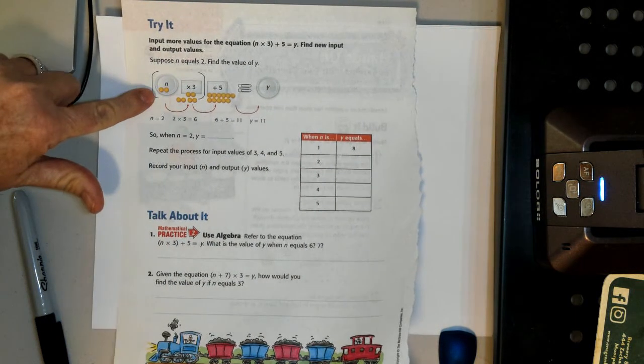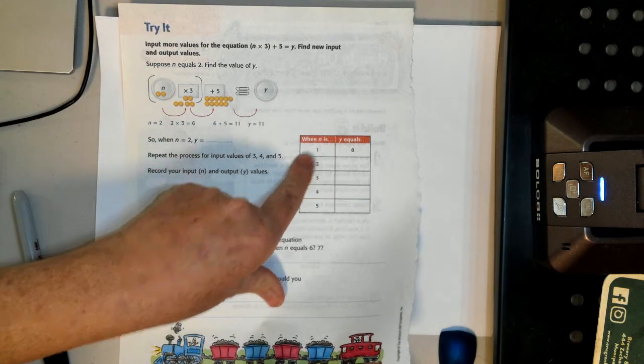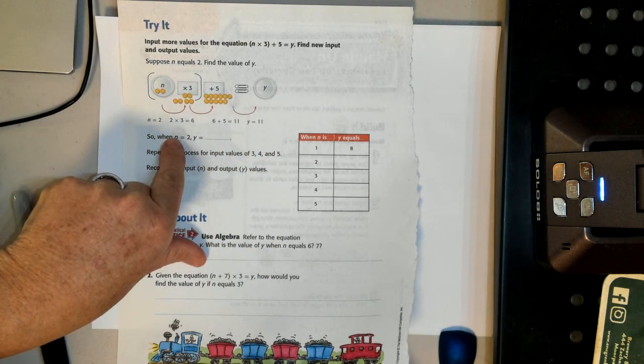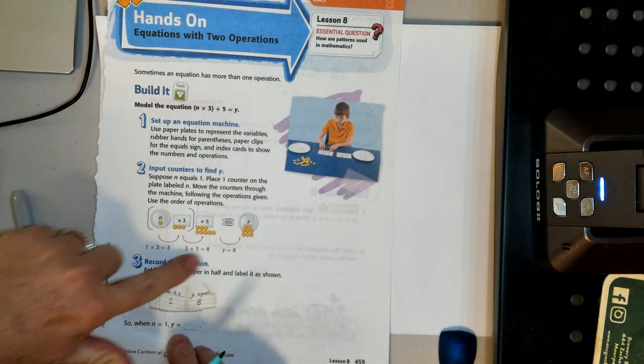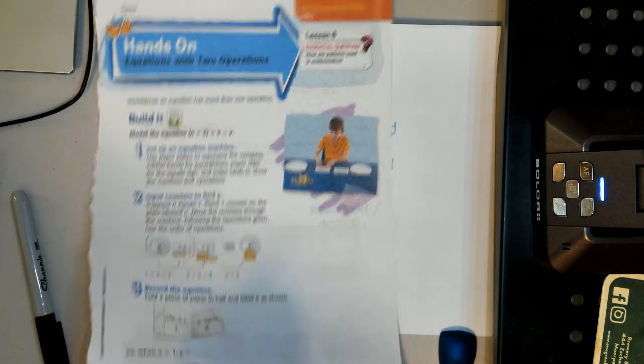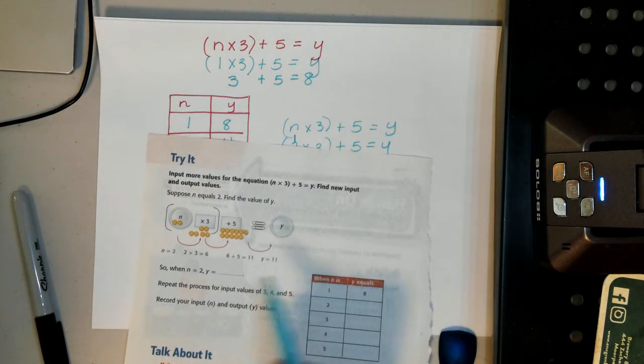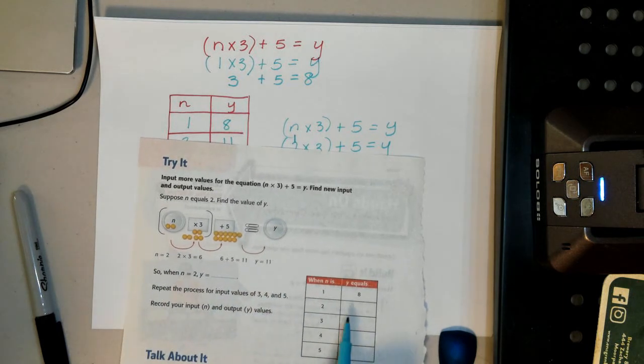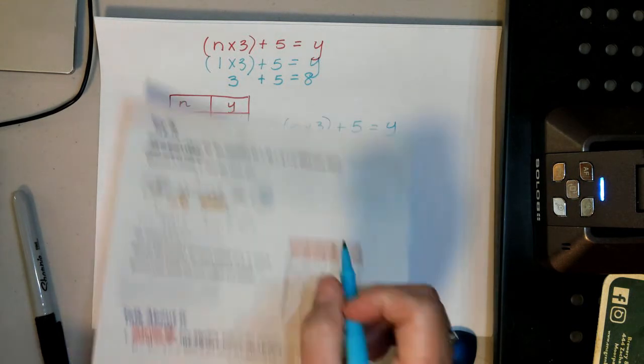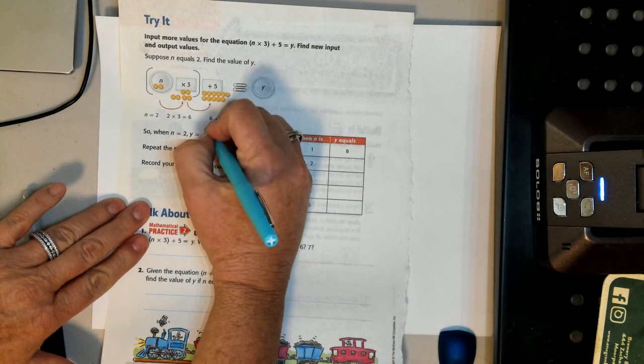So they showed us here. We did this first one. So the first one was the 1. And we put it in, and we realized that y equaled 8. Now they wanted us to do the 2. Well, we already did it. We solved the problem. We plugged the numbers in, and we got 11. So n equals 2, y was 11.